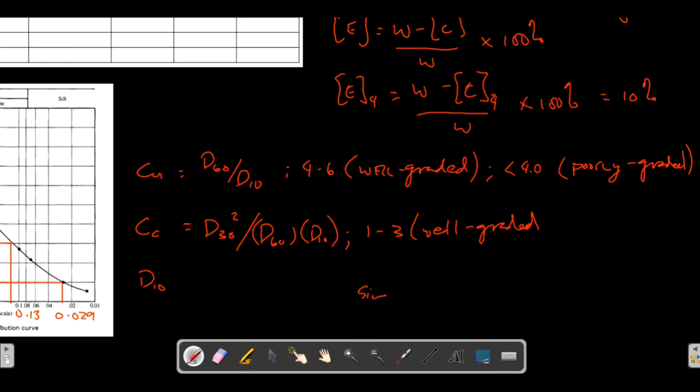For single sized soil sample, meaning you have a uniformly graded soil sample, the value of CU and CC is closer to 1.0. This means that D60 is actually not that different with the diameter of the 10 percent passing or 10 percent finer. These values are almost the same, that's why the values are closer to 1.0 for single sized soil sample.